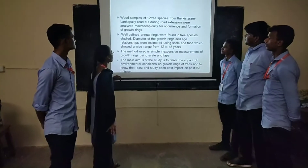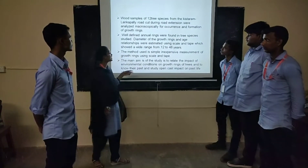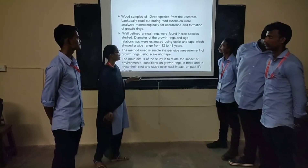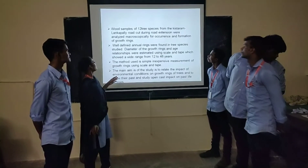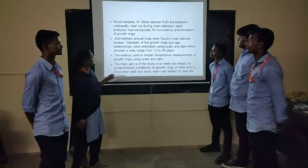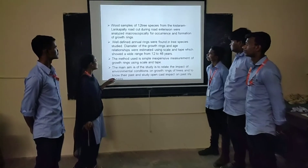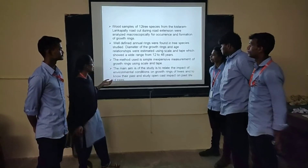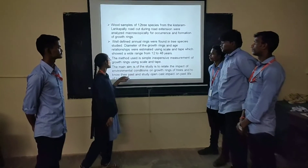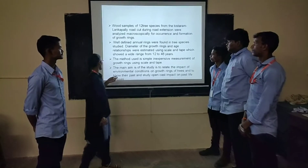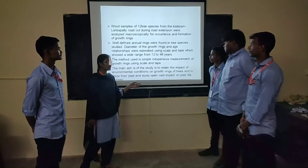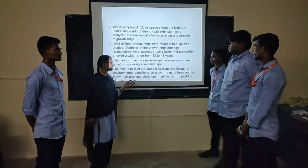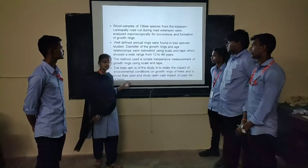Good samples of quality species from the historical limits were studied. Early growth cut during growth extensions were generalized macroscopic, and unconfirmed formation of growth rings was observed. Very different annual rings were formed in three species studied. The diameter of growth rings and age relationships were estimated using scale and tape, showing a wide range from 4 to 48 years. The method used is simple and not very expensive. The main aim of the study is to relate the impact of environmental conditions on growth rings of trees and to know their past, and to study the open cast impact on tree growth.